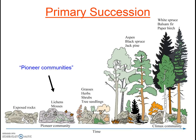Here's a diagram that shows each step along a hypothetical example of primary succession. Again, primary succession starts when no soil is present and no living things are currently present in that ecosystem.